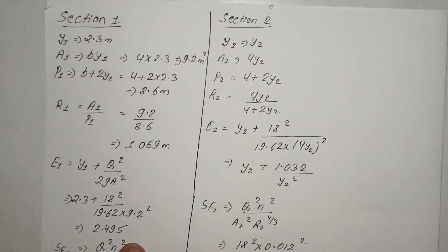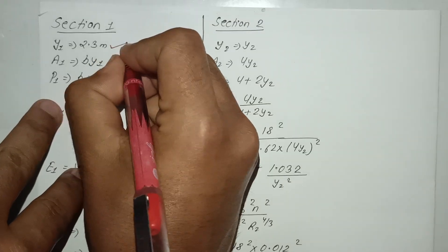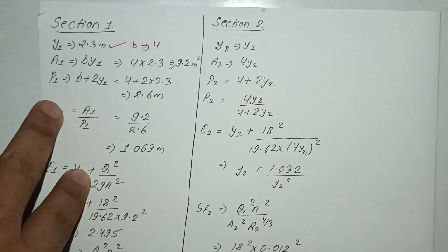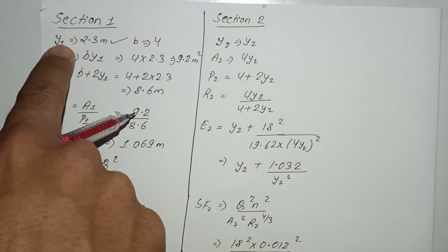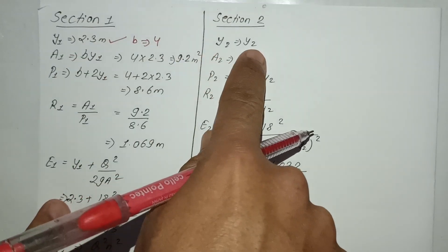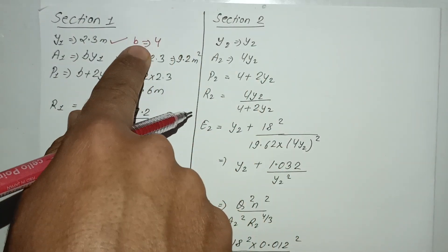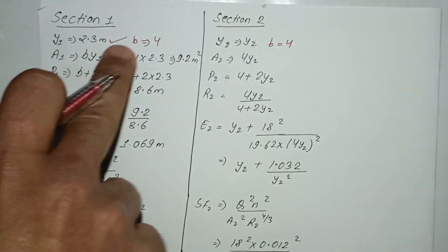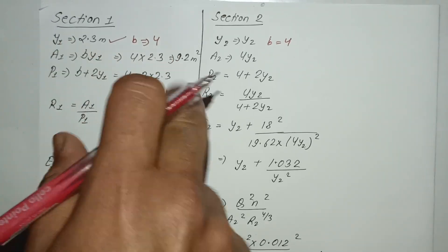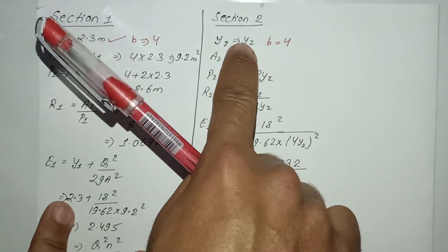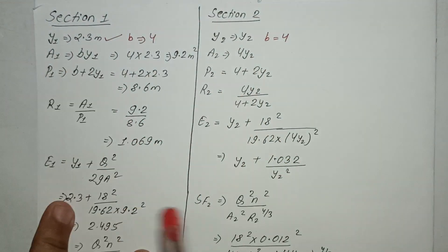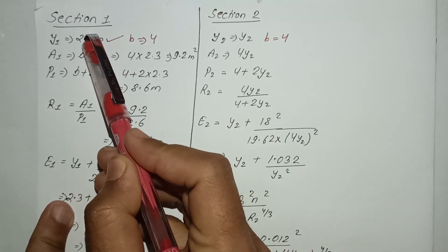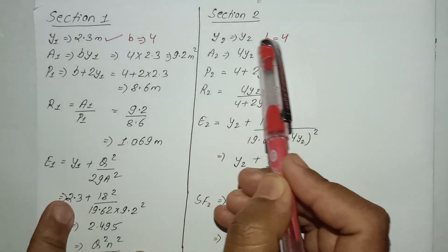We have section 1 and section 2. At section 1, B1 equals 4 meters. The flow area is A equals B times Y. The wetted perimeter is P equals B plus 2Y, which gives P equals B plus 2 times Y.